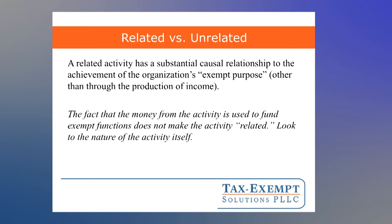So let's look at each of these three different elements, starting with the concept of what is a related or an unrelated activity. A related activity has a substantial causal relationship to the achievement of the organization's exempt purpose — that is, the mission for which the organization got its tax-exempt status. If you're a 501(c)(3), that might be a charitable, educational, scientific, or religious purpose. When you're looking at whether an activity is related, the activity itself must directly further that tax-exempt purpose. The tricky part is that you have to put aside the fact that the activity generates money that will then be spent on the tax-exempt purpose — you're looking really just at the activity itself.